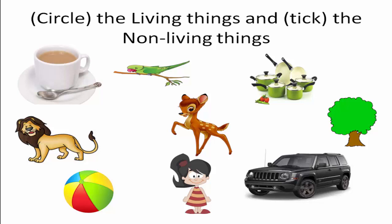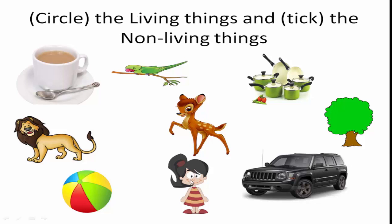Now I will start the activity to recognize the living and non-living things. Circle the living things and tick the non-living things. Cup — cup is a non-living thing, tick the non-living thing. Parrot — parrot is a living thing, circle on the living thing.